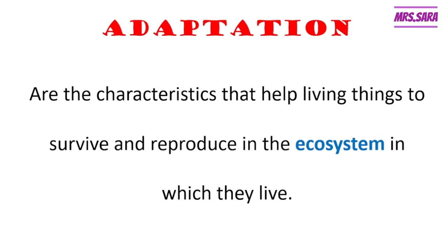Adaptation are the characteristics — characteristics mean the features that they have — that help living things like us as humans, like animals, like plants, to survive. Survive means to live, and reproduce means to have babies, in the ecosystem in which they live. The ecosystem is the place that living things and non-living things live in together, and it provides living things with food, water, and shelter.